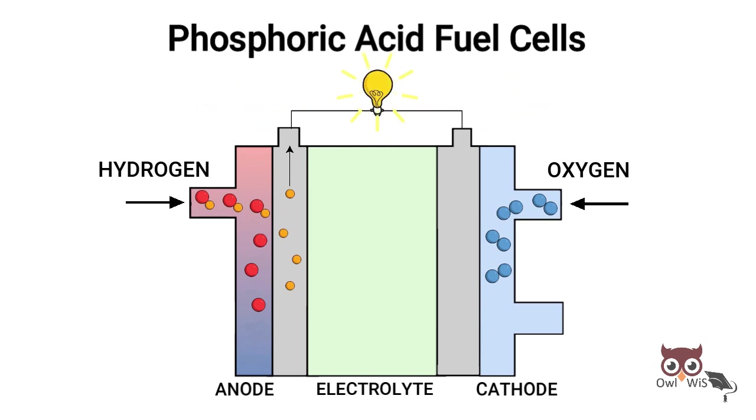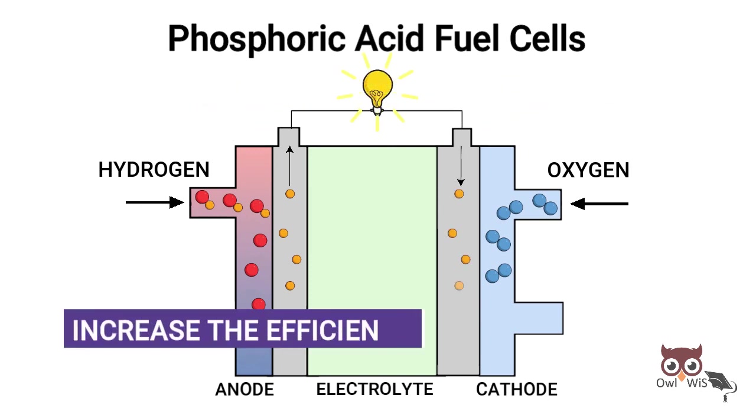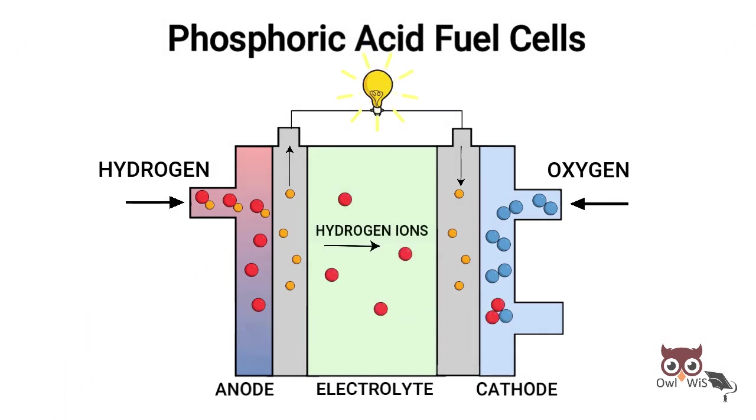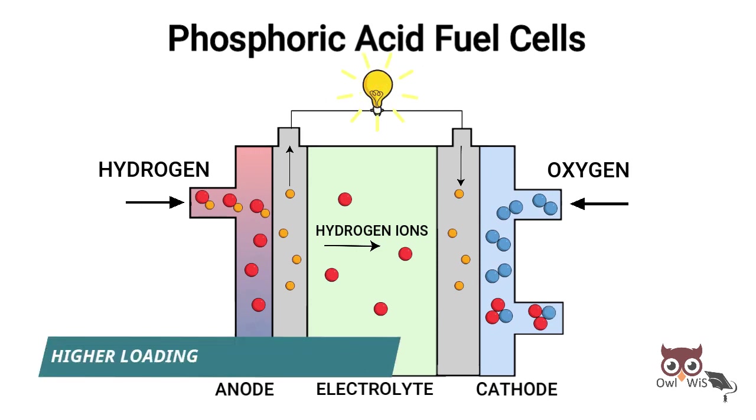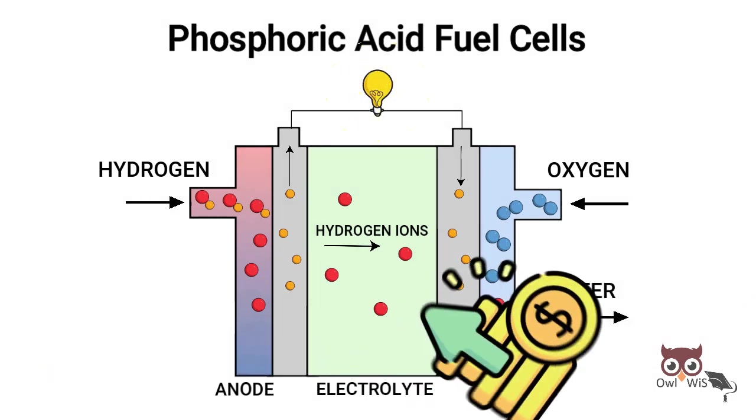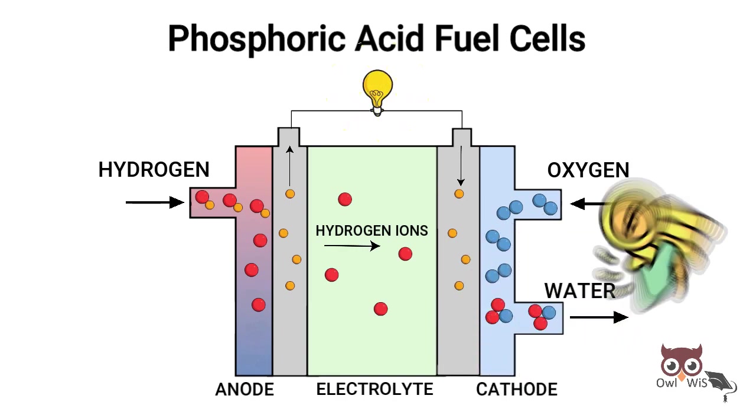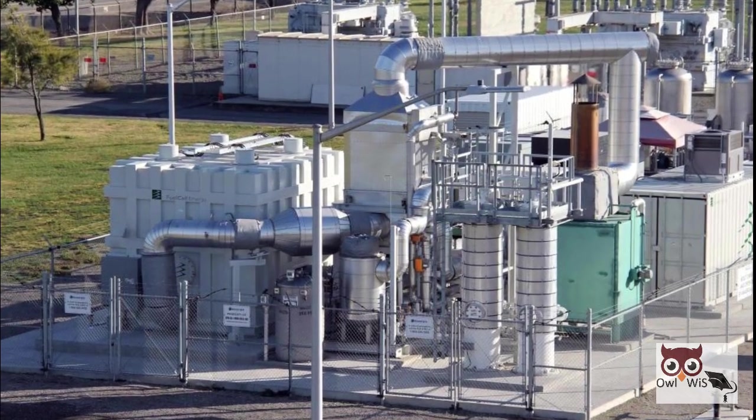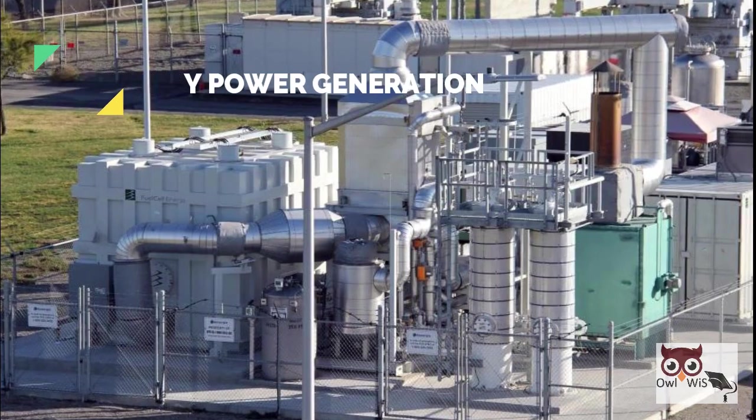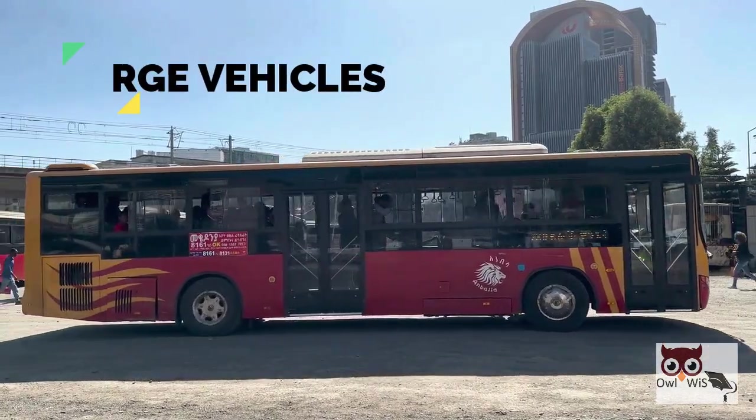Using this heat in cogeneration can enhance the efficiency of phosphoric acid fuel cells from 40 to 50 percent to about 80 percent. They require much higher loadings of expensive platinum catalyst than other types of fuel cells which raises the cost. This type of fuel cell is typically used for stationary power generation and for applications in large vehicles such as buses.